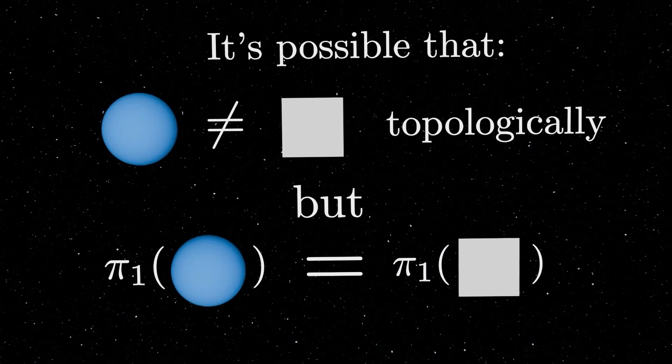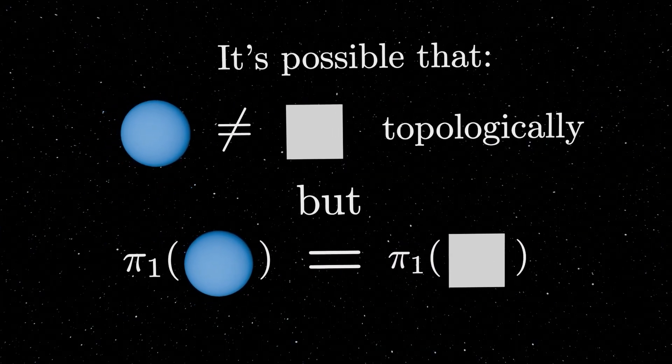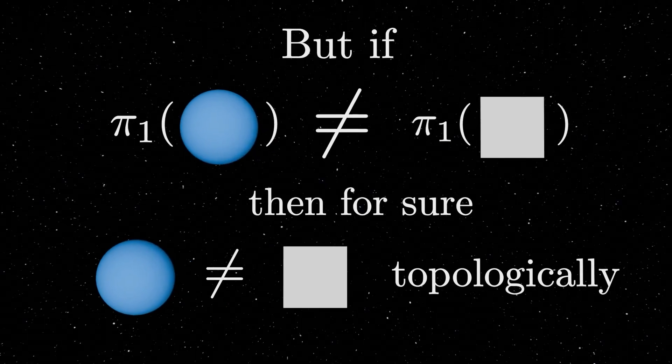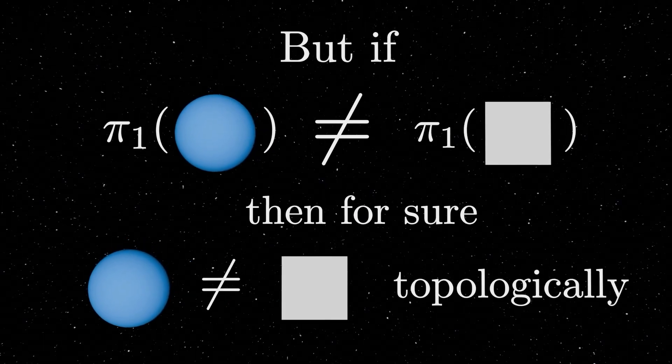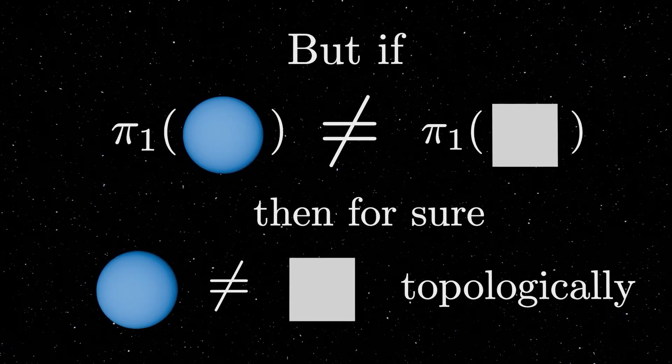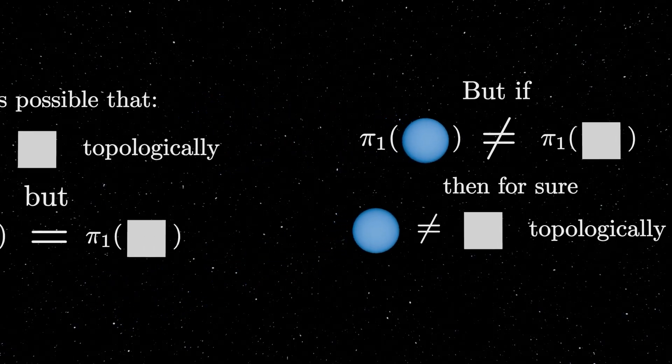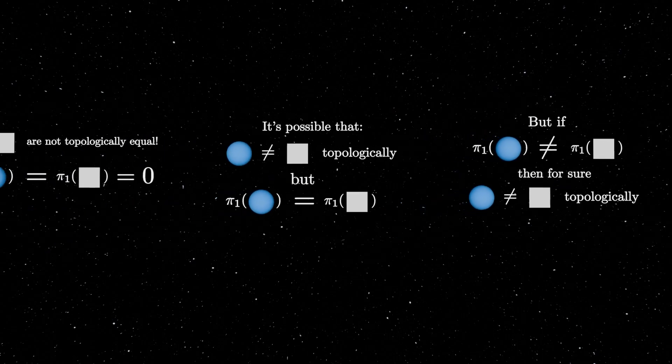In other words, two topological spaces that are not topologically equal might still have the same fundamental group. But what is true is that two topological spaces with different fundamental groups cannot be topologically equal. Hence, the fundamental group allows only to a limited extent to tell topological spaces apart.